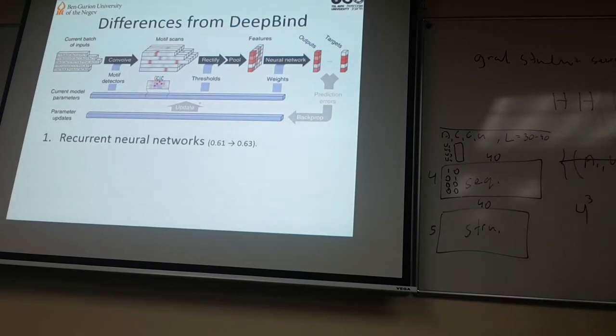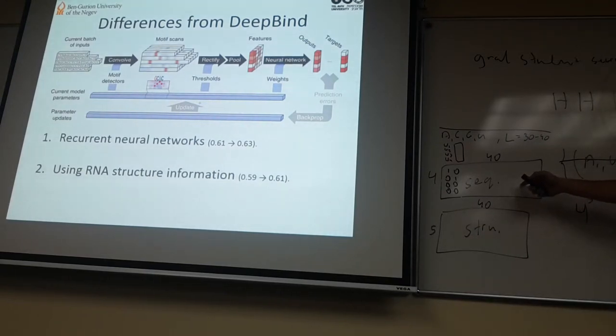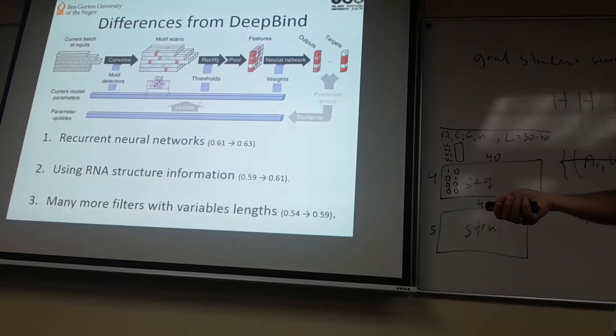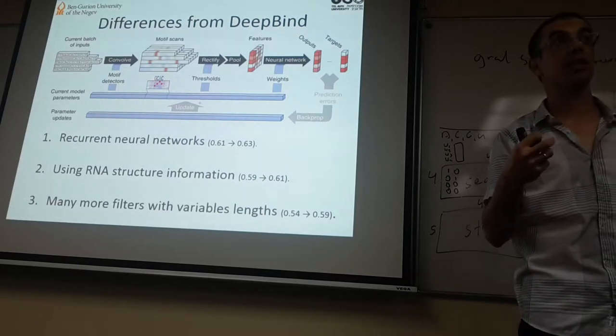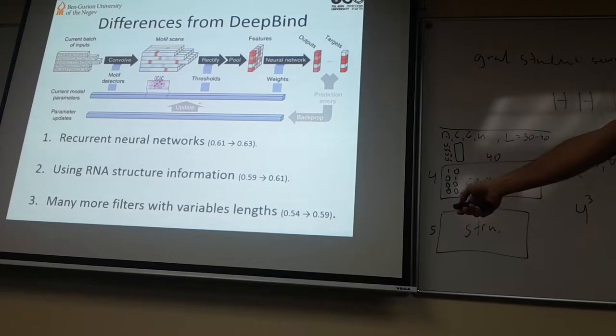First, we asked what is the gain we get from recurrent neural nets as opposed to convolutional neural nets. Here we saw a boost from 0.61 to 0.63 average Pearson correlation over 244 experiments. In addition, we saw that when we didn't use the structure, our Pearson correlation dropped to 0.59. Using it we got to 0.61, so is there a lot of information in the structure? Maybe not a lot if we already have the sequence and we can pick some of the structure encoded in the sequence. The last data we tested was using a smaller set of filters. Instead of 256 kernels, using only 16 kernels similar to D-Bind. Here we also saw a drop from 0.59 to 0.54, so also the parameters we picked for the neural net, mainly the number of kernels, helped us improve the performance that was published for the D-Bind algorithm.